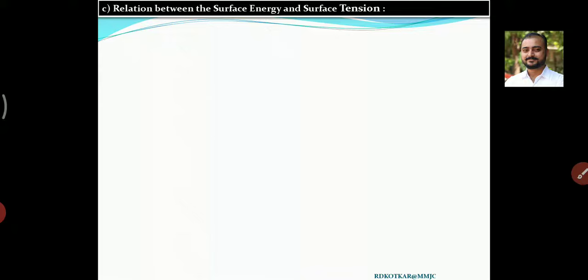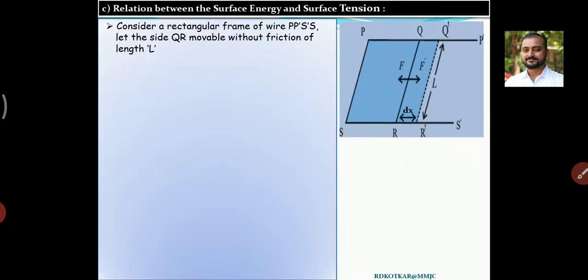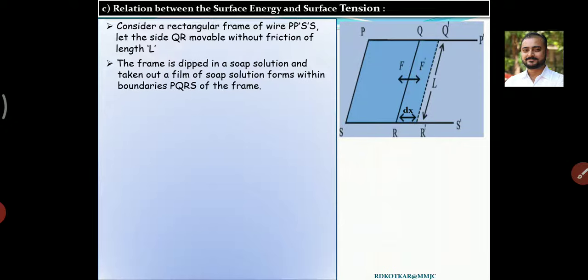First we have to understand the relation between surface energy and surface tension. For that we consider a rectangular frame of wire p p-dash s-dash s. Observe this diagram in which you can see the rectangular frame, in which the side qr is movable without friction and this qr has a length l. The frame is dipped in a soap solution and taken out, and a film of soap solution forms within boundaries p q r s of the frame.